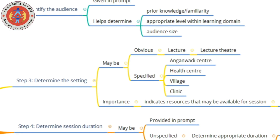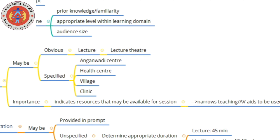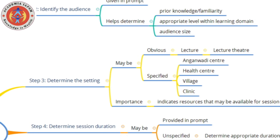The third step is determining the setting. If you're dealing with a lecture, the setting is the lecture theater. Sometimes you may be told to plan for a session in a health center, clinic, or Aanganwadi center. This is important because the resources available for conducting a session depend on the setting. A large variety of audiovisual aids available in the lecture theater will not be available in an Aanganwadi center, so knowing the setting helps narrow down what you can reasonably cover.